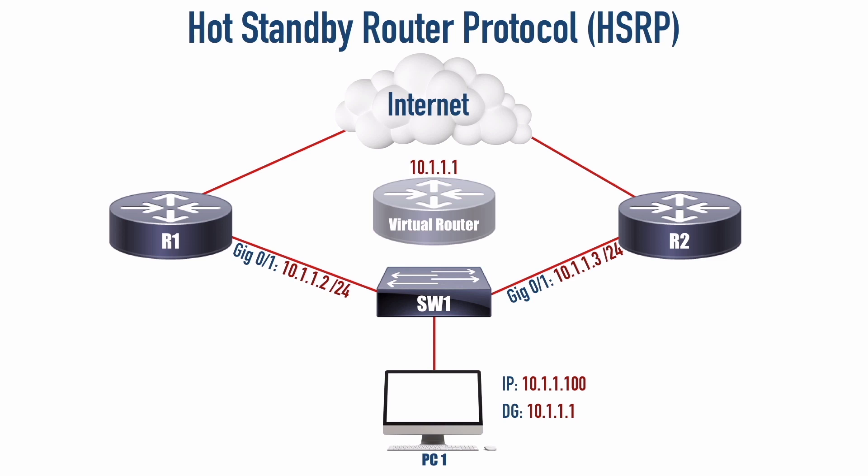R1 can actively service packets destined for 10.1.1.1. But if something were to happen to R1, we've got R2 that's a standby router. It's going to notice that R1 is no longer available, and R2 is going to take over and service packets destined for 10.1.1.1. Otherwise we've got a single point of failure, but now we're getting some redundancy thanks to HSRP.